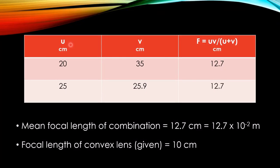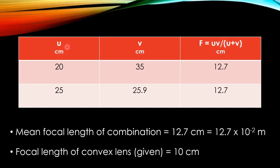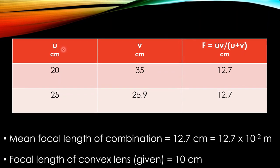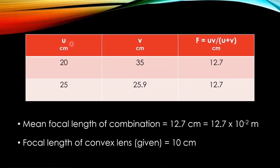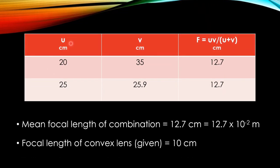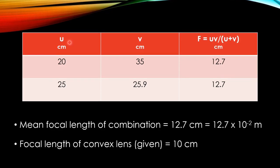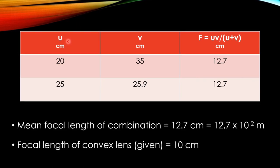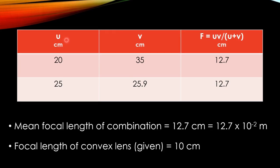Here, U is 20 cm and V is 35 cm. The formula, F is equal to UV divided by U plus V, can be used to calculate the focal length of a combination of lenses. By substituting, we obtain a focal length of F equal to 12.7 cm. Similarly, if U is 25 cm and V is 25.9 cm, the focal length of the combination is 12.7 cm.